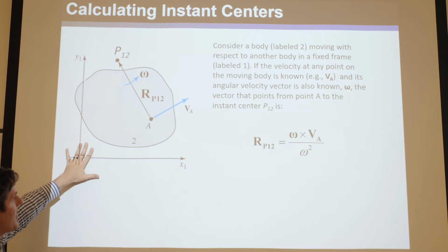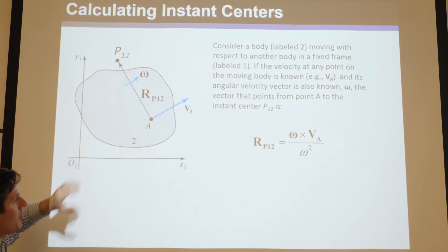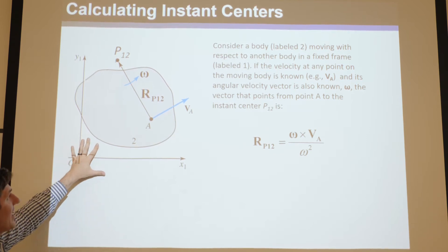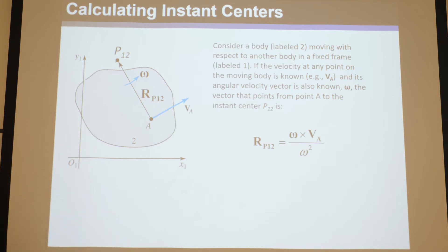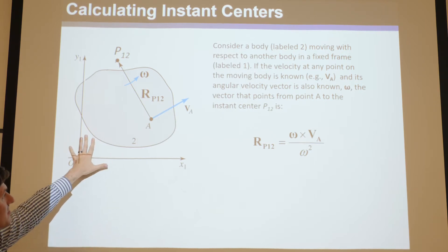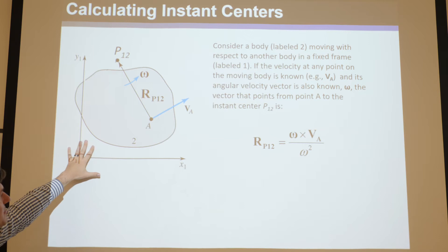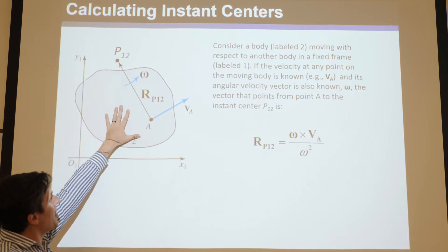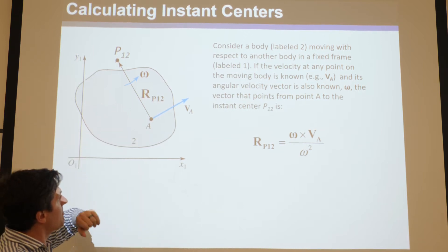Say you have one body that's fixed to the global coordinate system here, and it's held fixed. Or in the apparent velocity land, it's not moving with respect to this ground here. So imagine this velocity is zero everywhere. And then you've got this other body, two, and it is moving.